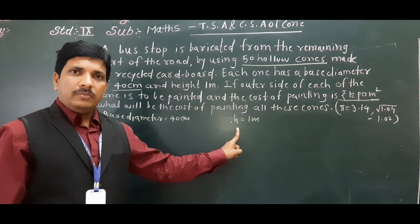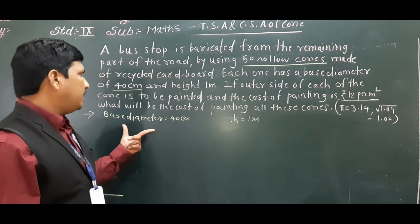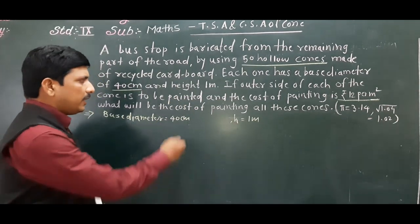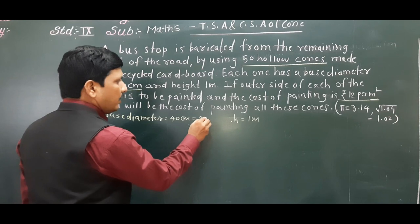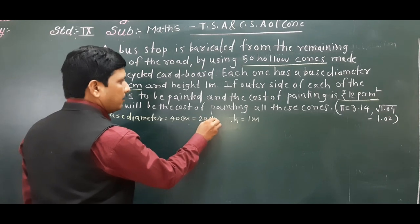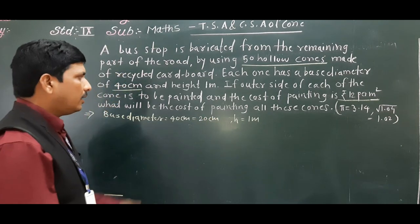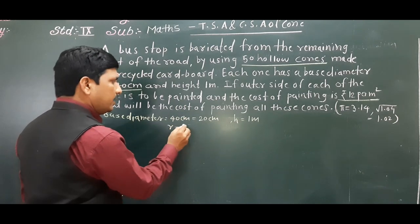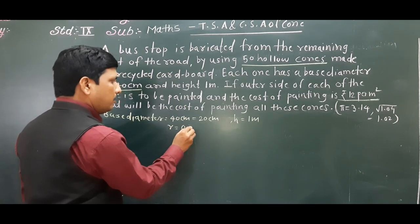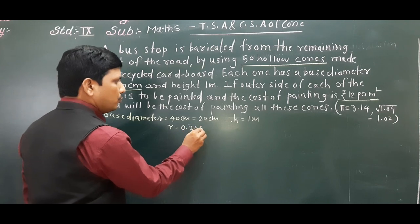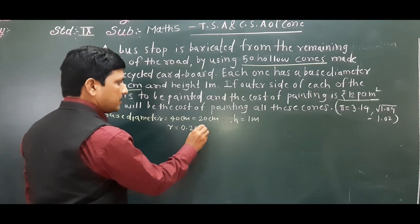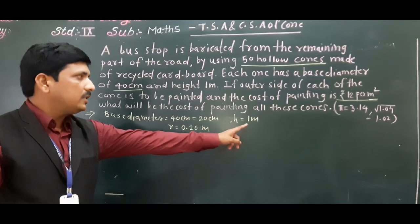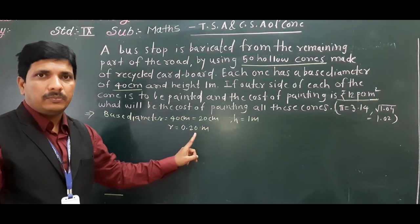Height is given in meters, so we need to convert base diameter into meters. The radius will be 20 centimeters, and in meters the radius is equal to 0.20 meters — dividing by 100. So radius is 0.20 meters, and height is 1 meter. Both are now in meters.